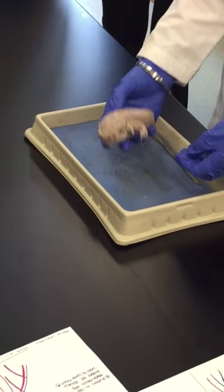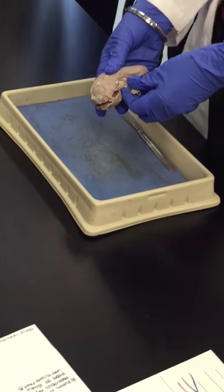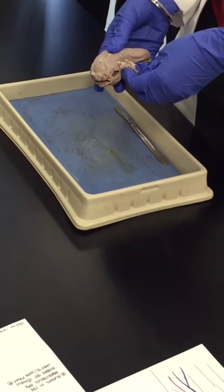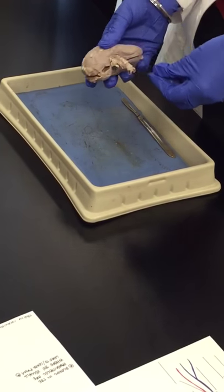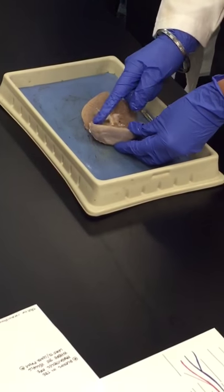This is a kidney. This is the hilum where we have the renal artery, the renal vein, and the ureter coming out.